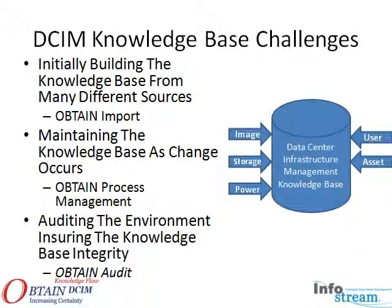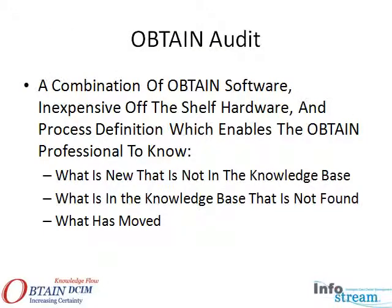The Obtain Audit Feature has been added to the Obtain DCIM Toolbox. This presentation will overview its functionality and how you can enable your organization to take advantage of it. The Obtain Audit Feature is a combination of software and inexpensive off-the-shelf hardware such as a barcode reader, and a process of reading barcodes which may be accomplished with unskilled labor.